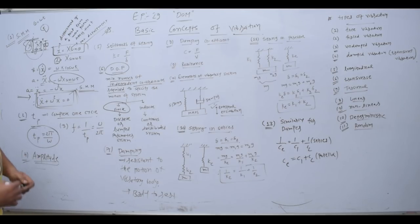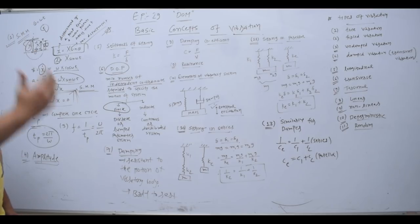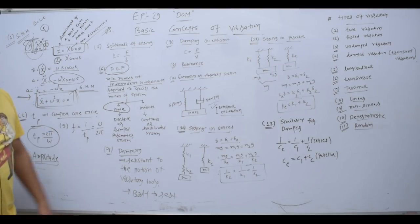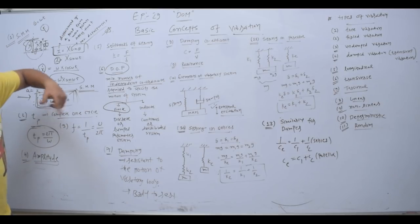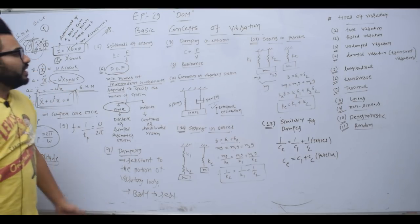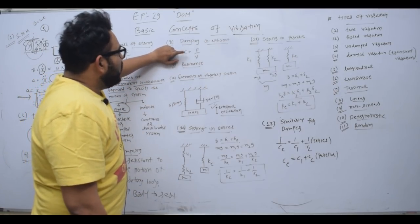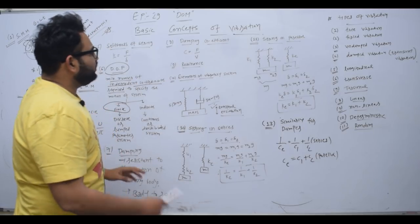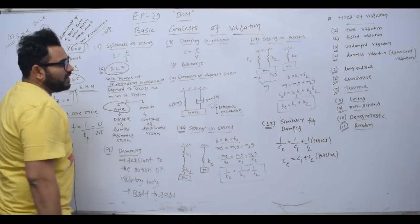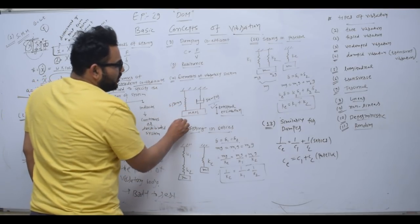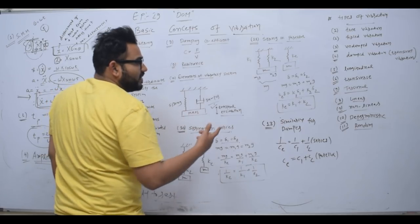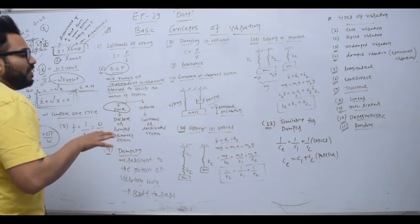What is damping? If any vibratory motion encounters an external resistance force, that resistance to the vibrating motion is called damping. Because of damping, the continuous vibrating motion will come to rest after some time. The damping coefficient is denoted as C, and is defined as damping force per unit velocity.